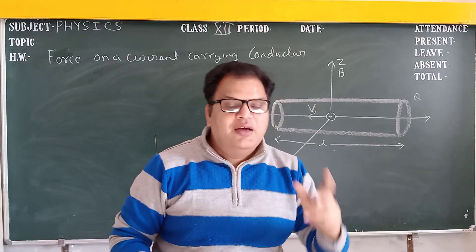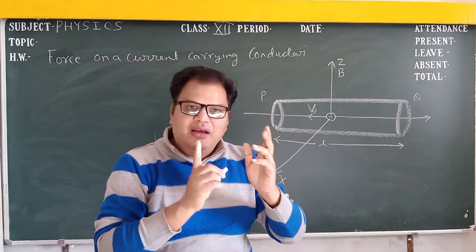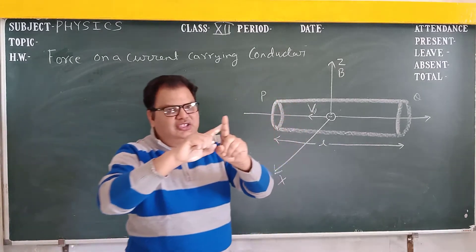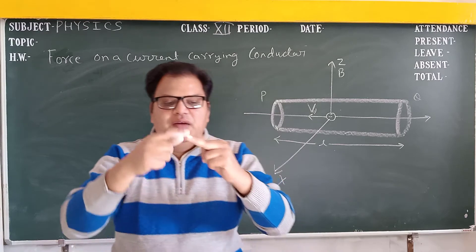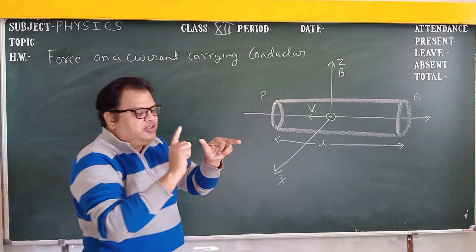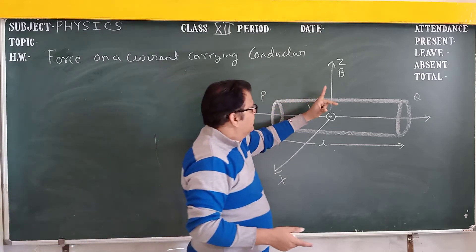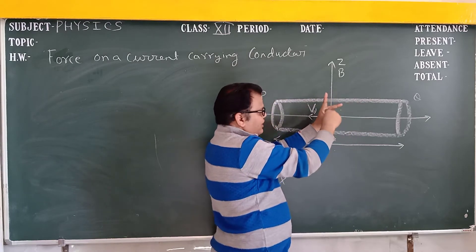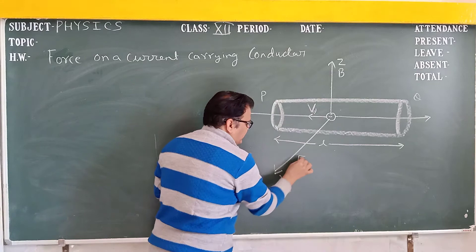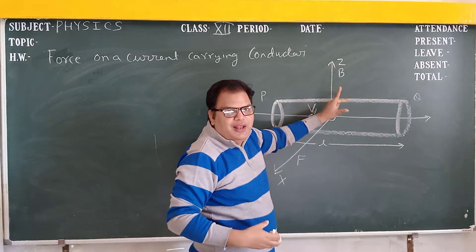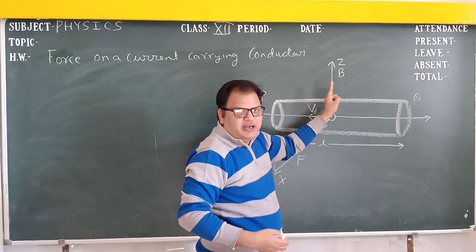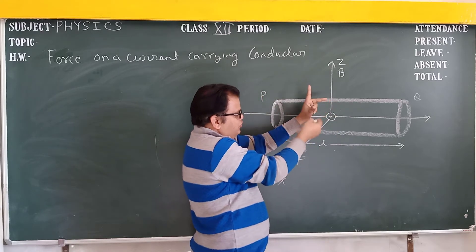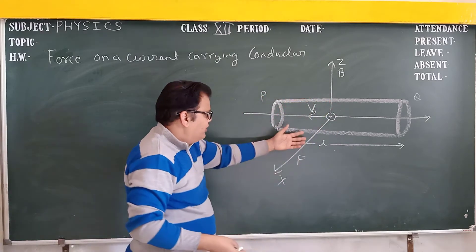Then the force direction — we can find it by applying Fleming's Left Hand Rule. The index finger shows the direction of the magnetic field, the middle finger shows the direction of current, and the thumb shows the direction of force. B is the direction of the magnetic field, I is the direction of the current, and the thumb shows the direction of the force acting in this direction.